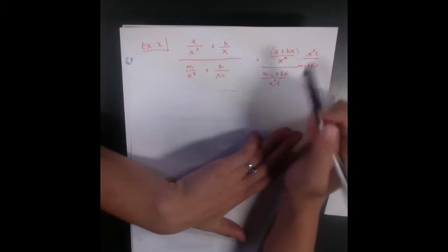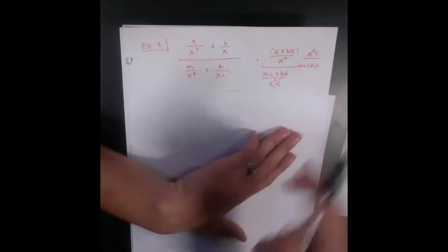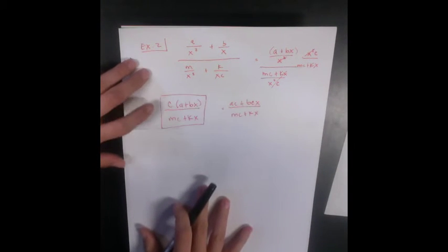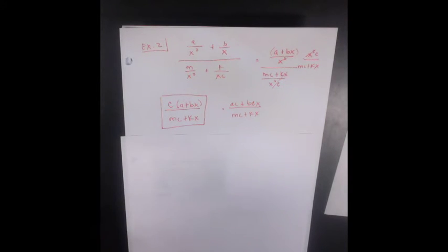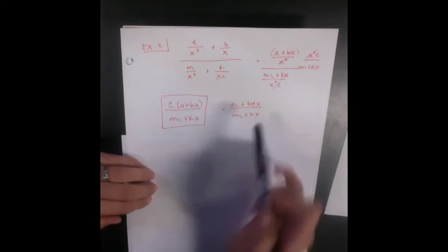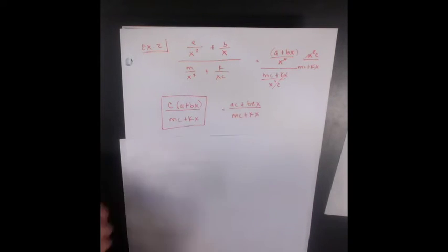It gets rid of my denominator and I notice that my x squareds can cancel on the top and bottom, leaving me with my final answer c times a plus bx over mc plus kx. If you want to distribute your c you can. It does not matter.